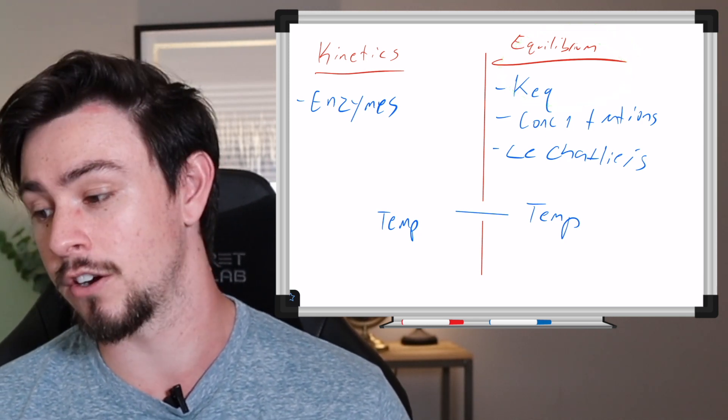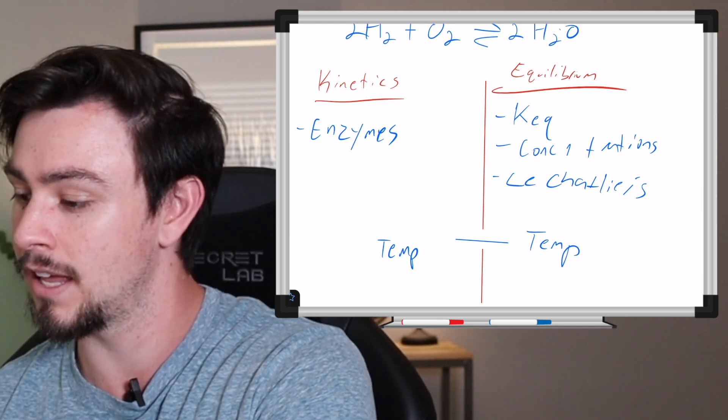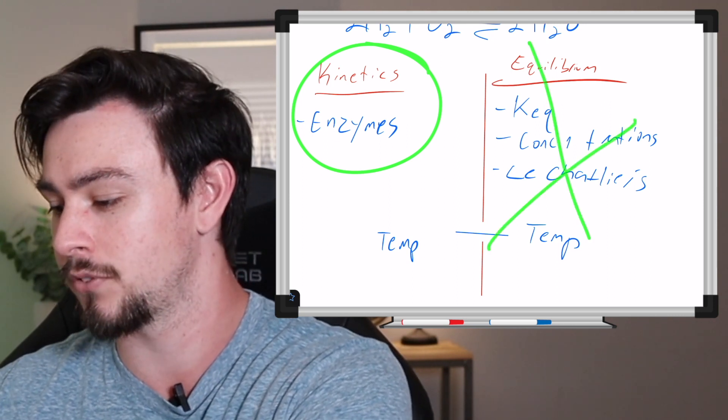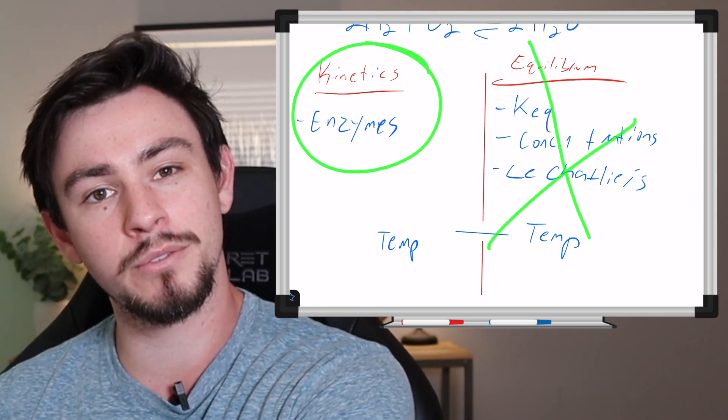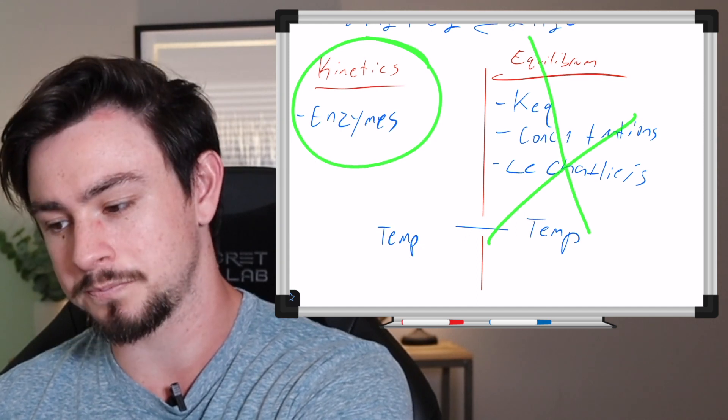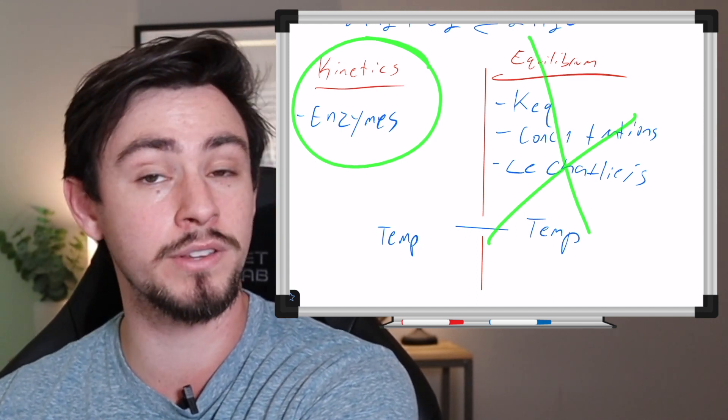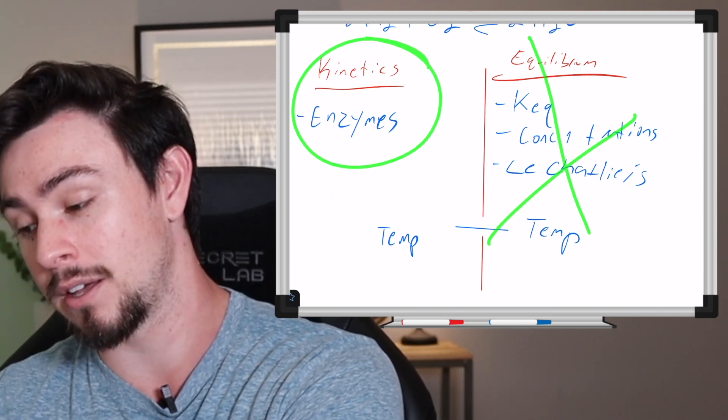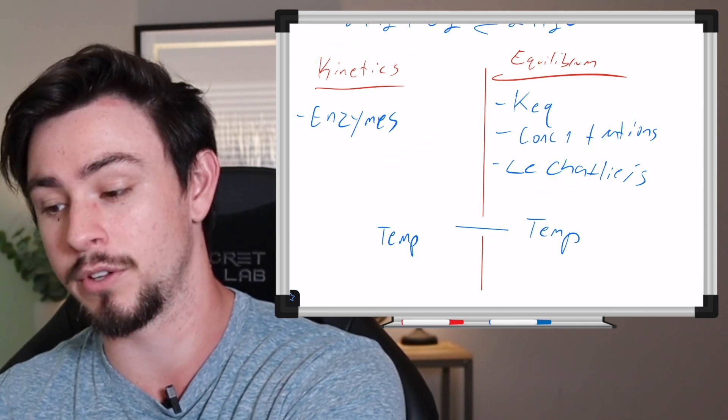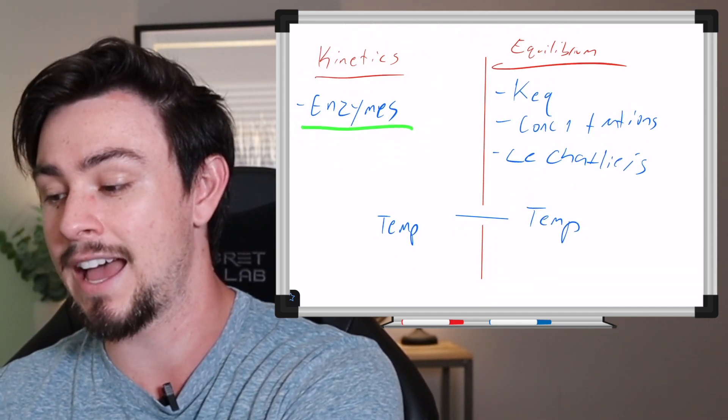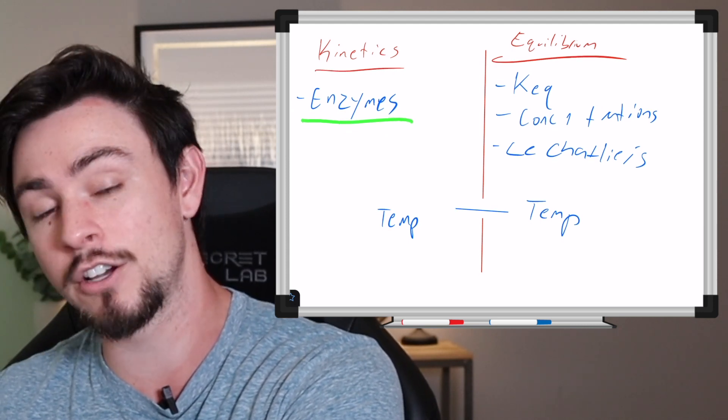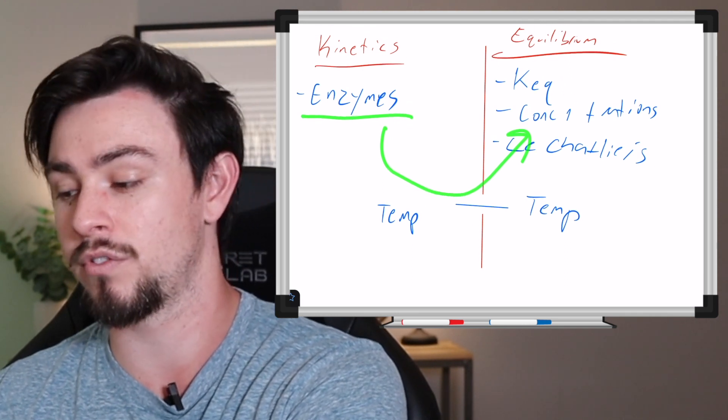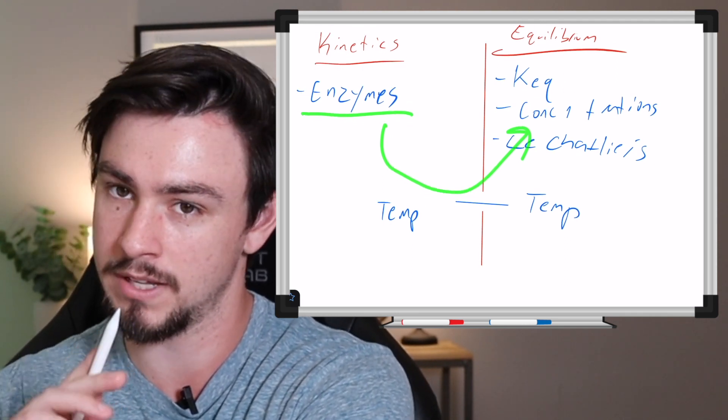So those are the two things that are different about it. And today we will discuss almost exclusively kinetics. That's the point of this video. So equilibrium will be coming in a few weeks whenever we talk about Le Chatelier's principle. But today we're talking about kinetics. It's just important that you understand the difference between the two. Because this is frequently an MCAT question. They'll talk about the addition of an enzyme and ask its impacts. And one of the incorrect answer choices is that it changes concentration in some form or fashion. It's actually a sneaky difficult question. So don't make that mistake.